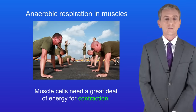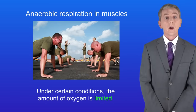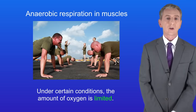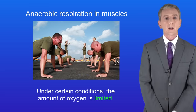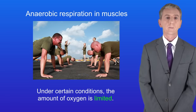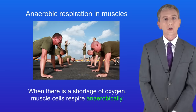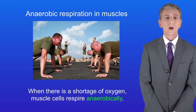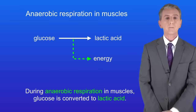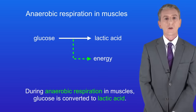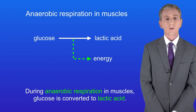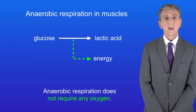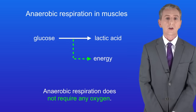Muscle cells need a great deal of energy for contraction but under certain conditions the amount of oxygen is limited. We'll be looking at those conditions in more detail in the next video on exercise. So when there's a shortage of oxygen muscle cells respire anaerobically. During anaerobic respiration in muscles glucose is converted to lactic acid, and anaerobic respiration does not require any oxygen.